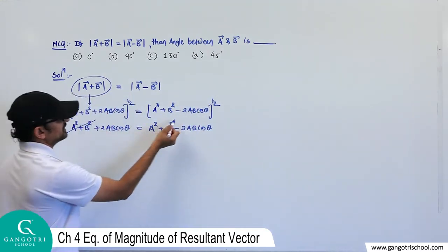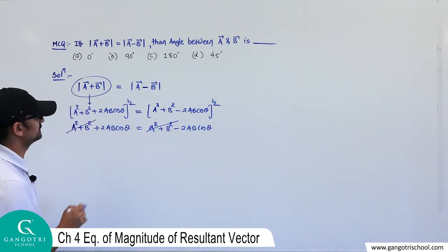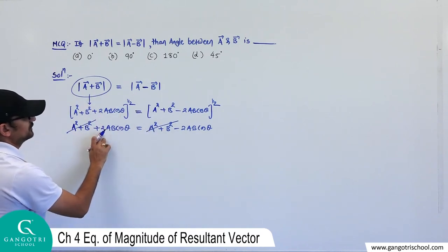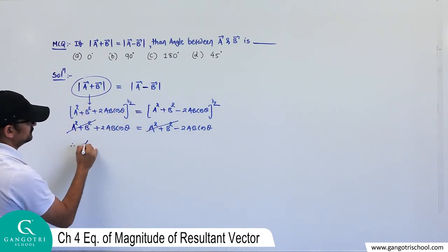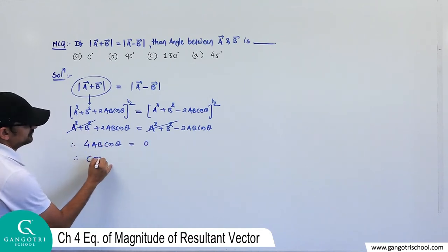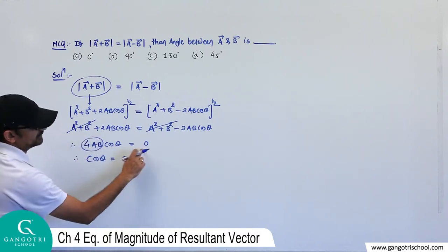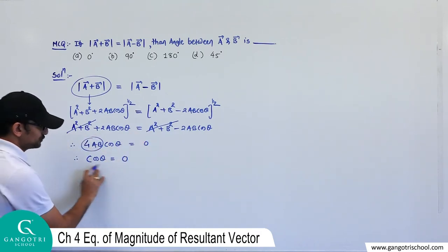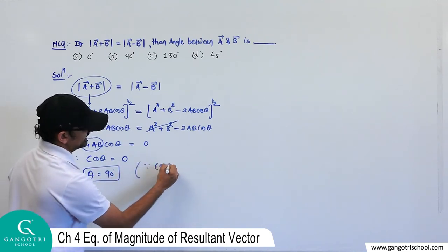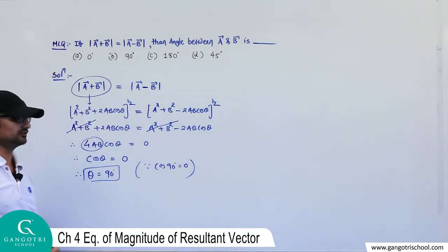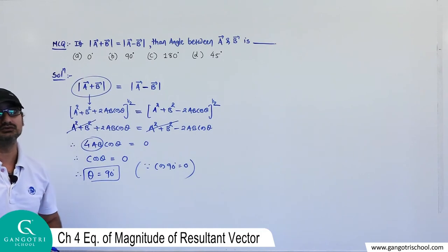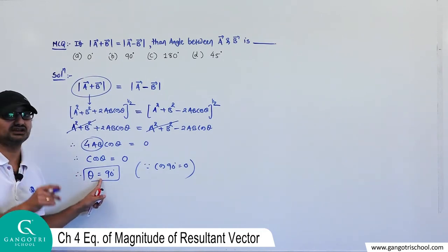Therefore cosθ = 0, which means θ = 90°. So the two vectors A and B should be perpendicular to each other. Let's cross-check this answer.